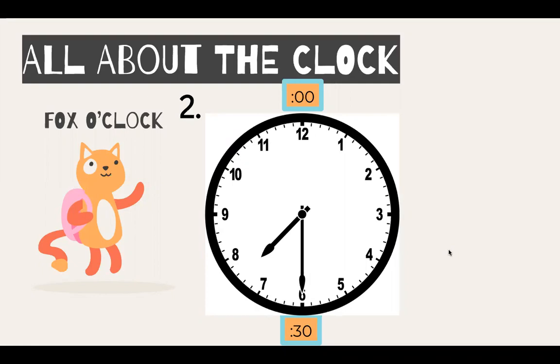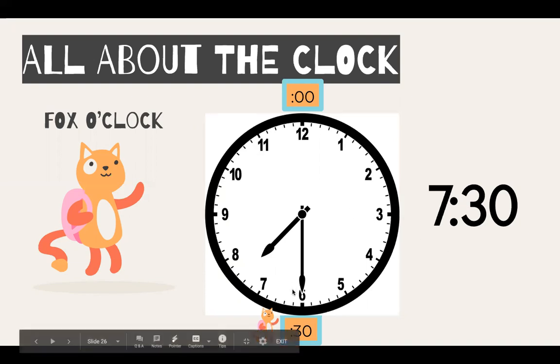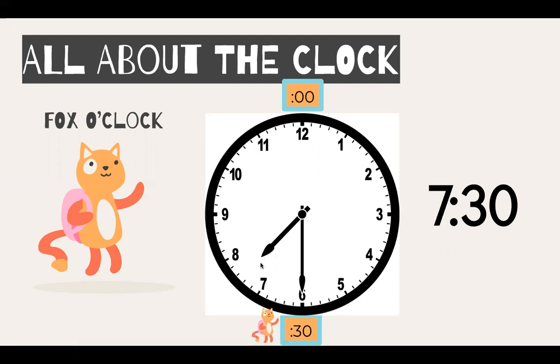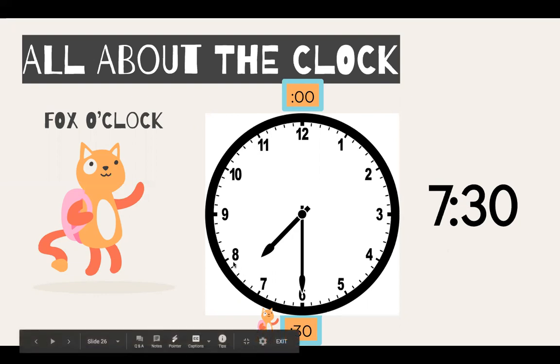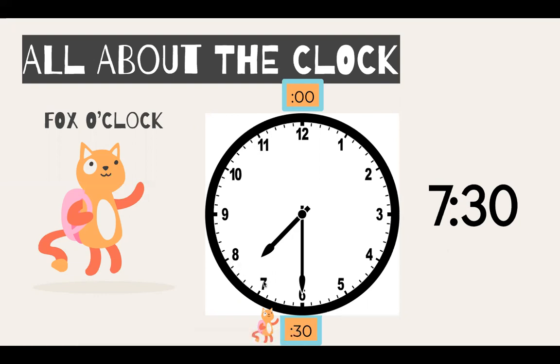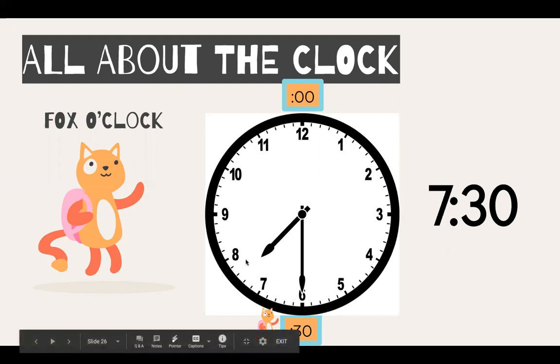What time is it on the clock? Pause the video and write your answer. The minute hand is pointed to the six, which means Fox O'clock is hanging out at 30 and the hour hand is in between seven and eight. Does that mean it's eight o'clock? No, it's seven. It's not quite eight yet.